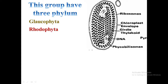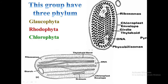Green algae or Chlorophyta have two to six thylakoids per band with no chloroplast endoplasmic reticulum membrane. Like higher plants, chlorophyll A and B are the main photosynthetic pigments, and the storage product is starch found inside the chloroplast.